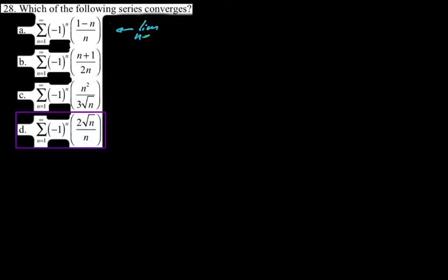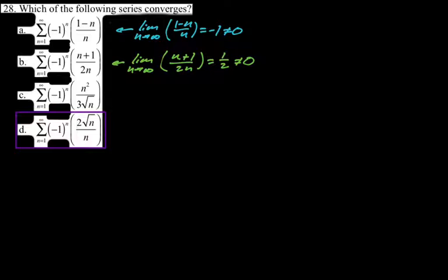Let's go through the other answer choices and say why they don't converge. If the limit as N approaches infinity of (1 minus N) over N gives negative 1, not 0, so that diverges. Another gives a limit of 1/2, not 0, so it diverges. And another gives a limit of infinity, so that definitely diverges. D converges by the alternating series test — that's our answer.